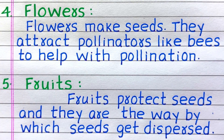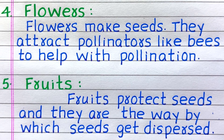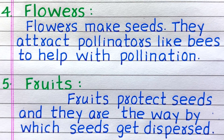The fourth part of a plant is flowers. Flowers make seeds. They attract pollinators like bees to help with pollination. Fifth, fruits. Fruits protect seeds and they are the way by which seeds get dispersed.